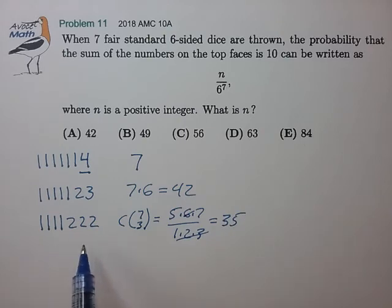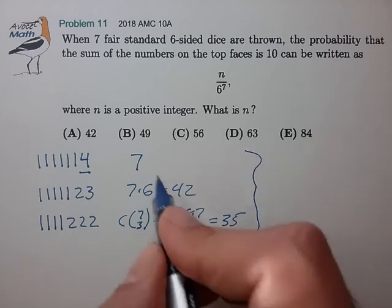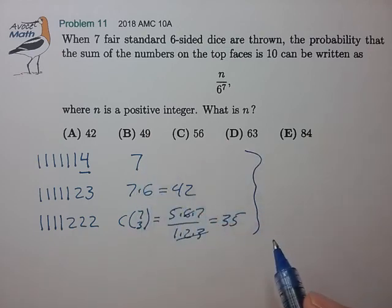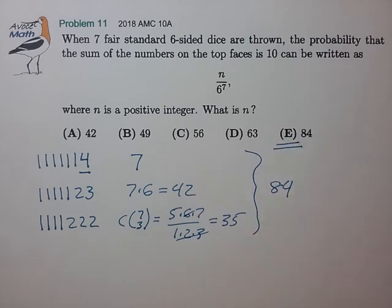Now I don't see any other configuration to achieve a value of 10. So I think that exhausts all the possible configurations. So all we have to do is sum up these values. 7 plus 42 plus 35 is 84. That matches E. Correct answer E.